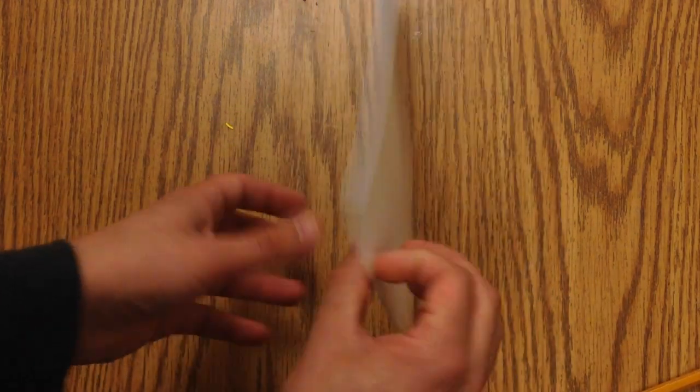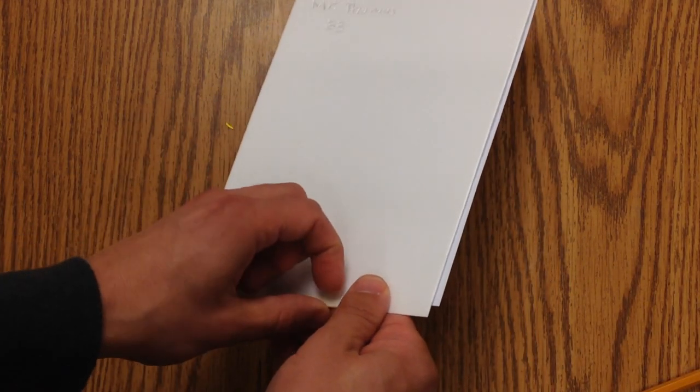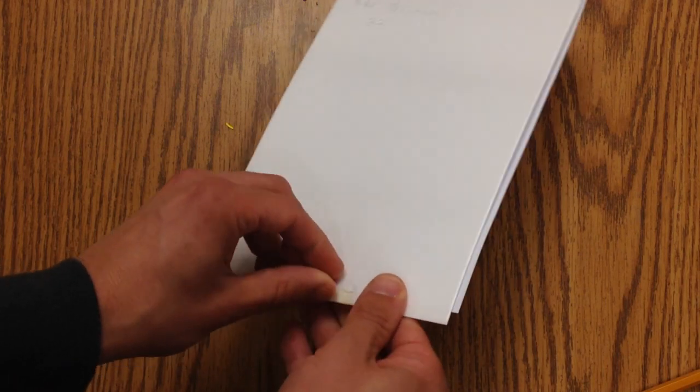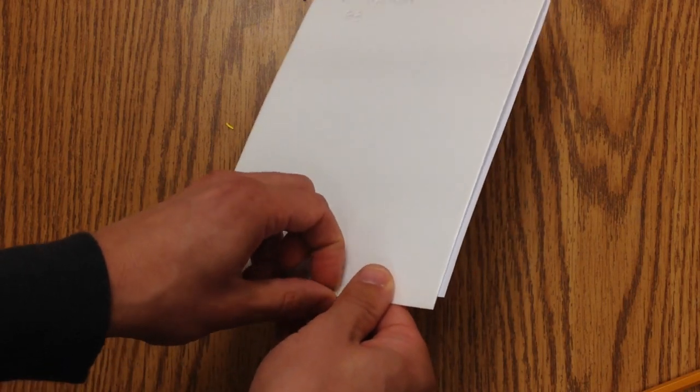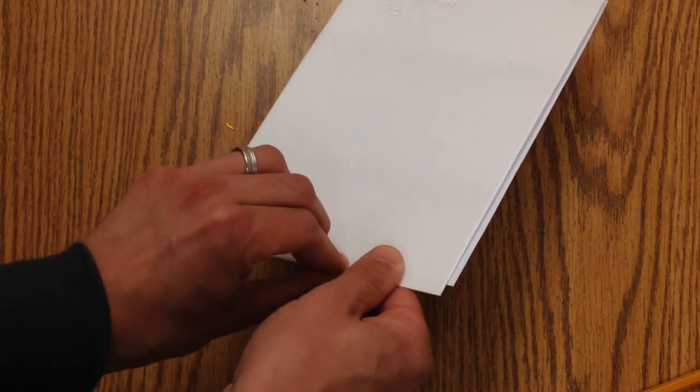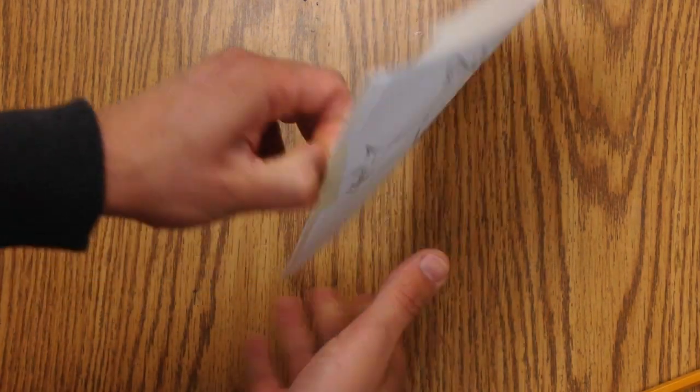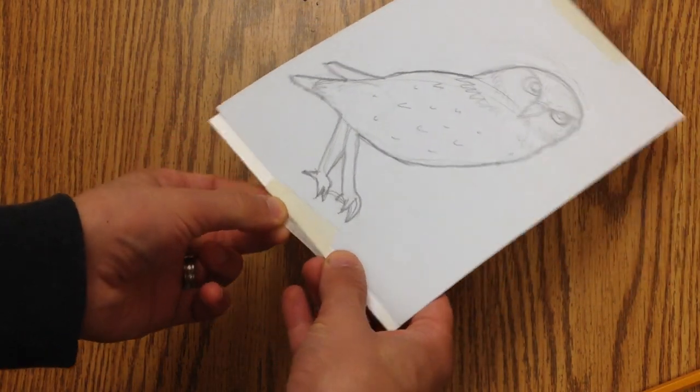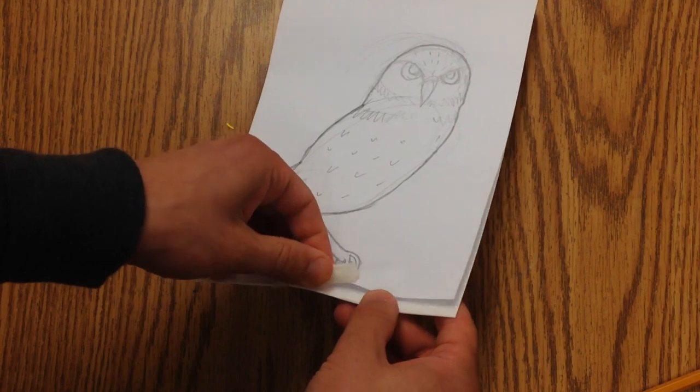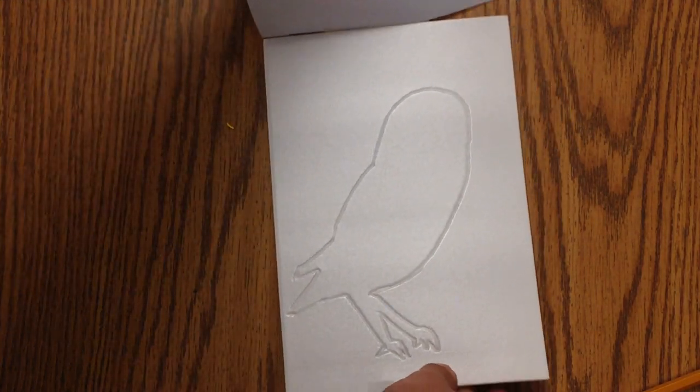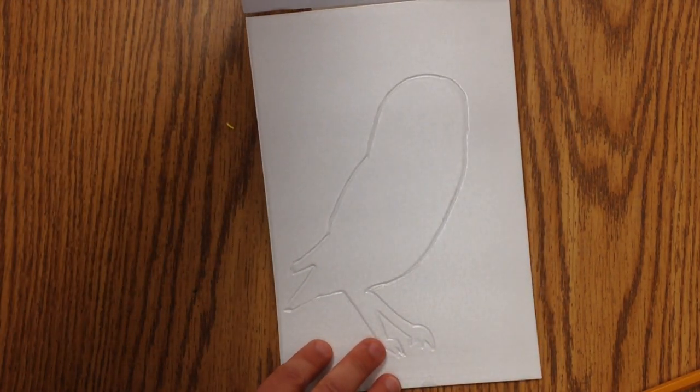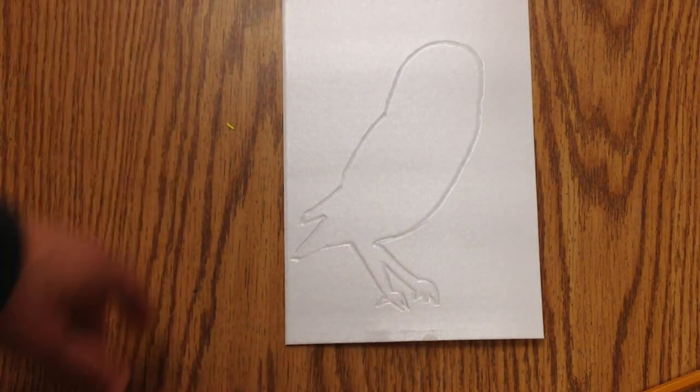Now when I take this off, I'll have the outline of my owl on there, and that can be printed for my first layer.